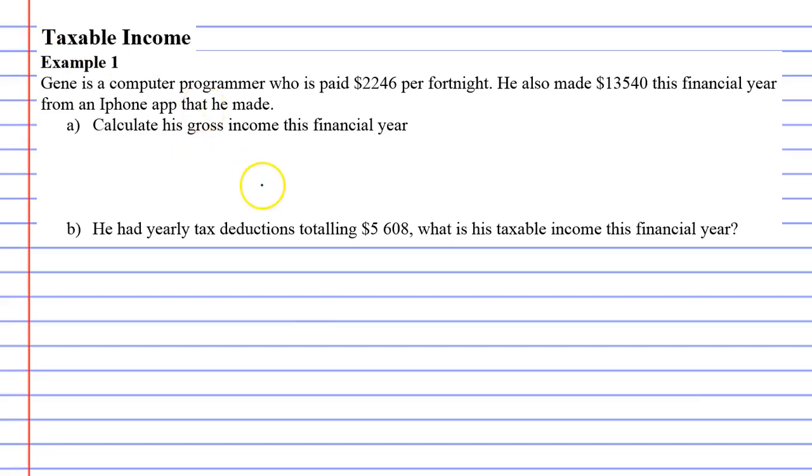The way we'll do that is we'll start with the fortnightly income, so $2,246 per fortnight, and we're going to times it by 26 to figure it out as a yearly income. So 2,246 times 26.